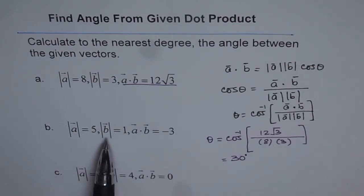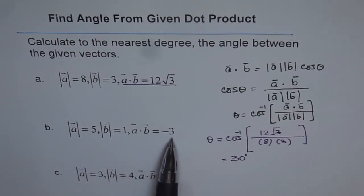a and b vector values, magnitudes of 5 and 1, and the dot product is -3. Now this one, a and b, the magnitudes are 3 and 4 respectively, and the dot product is 0. Interesting.